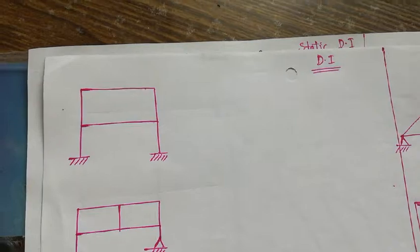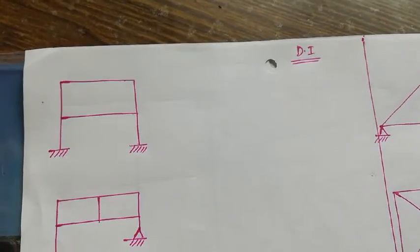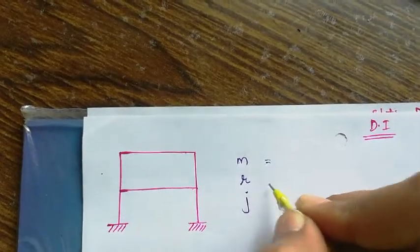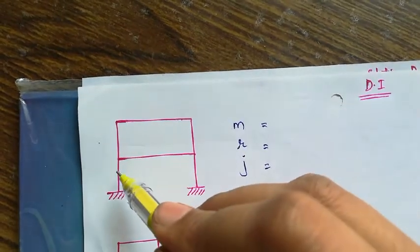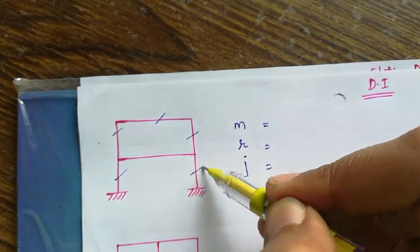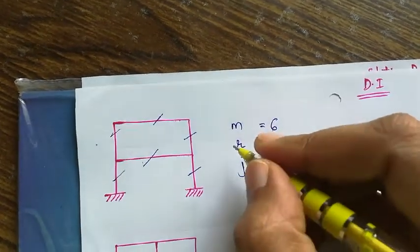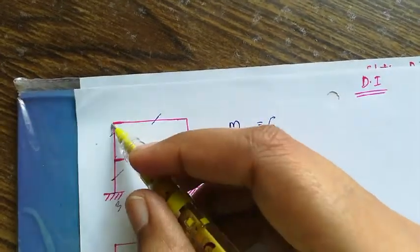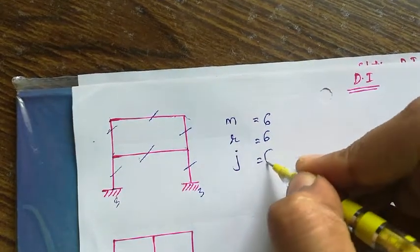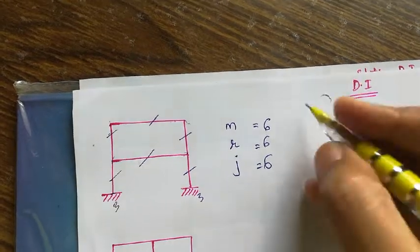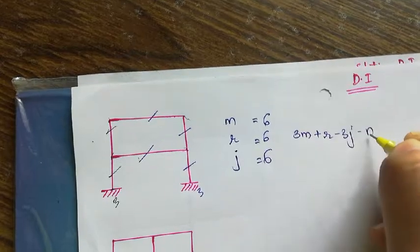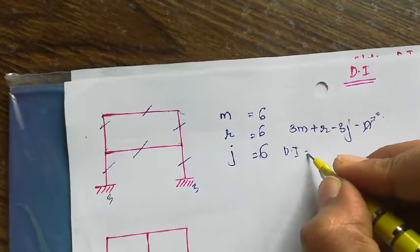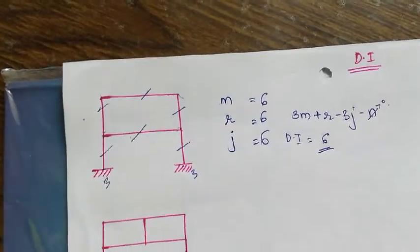Next problem: calculate m, r, and j. Number of members: 1, 2, 3, 4, 5, and 6, so m = 6. Reactions: 3 here and 3 here, so r = 6. Joints: 1, 2, 3, 4, 5, and 6, so j = 6. Since there is no internal hinge, n = 0. Substituting into 3m + r - 3j - n, the degree of indeterminacy = 6.